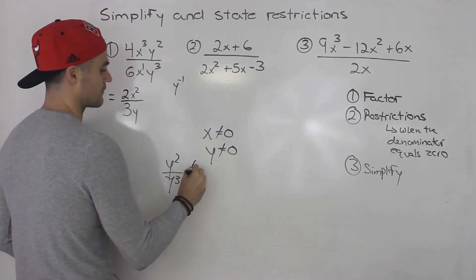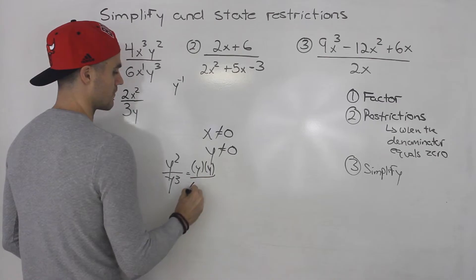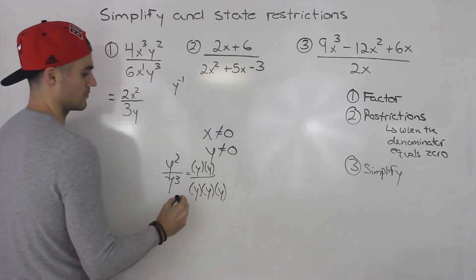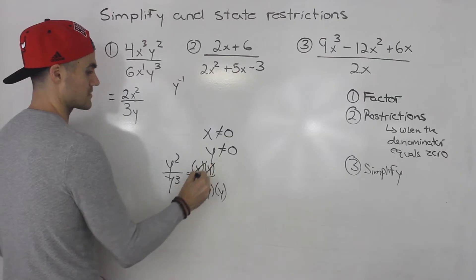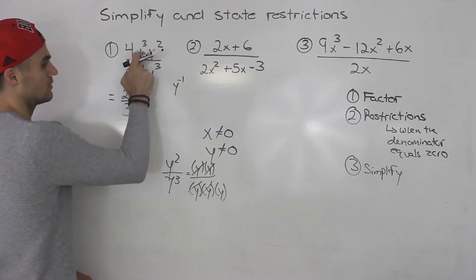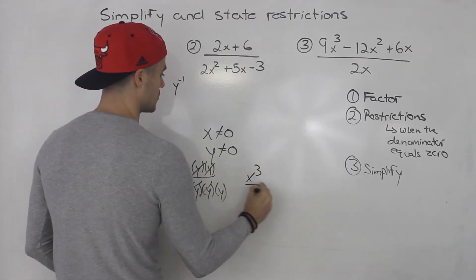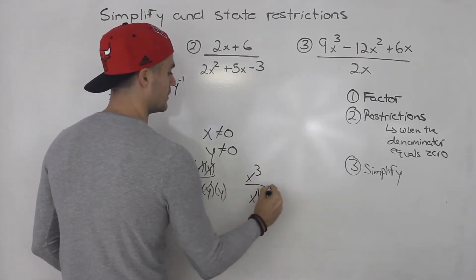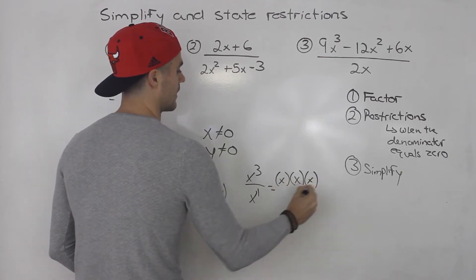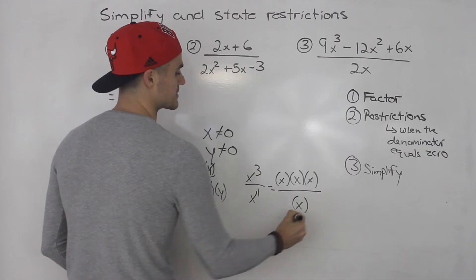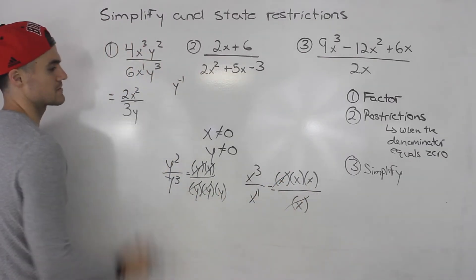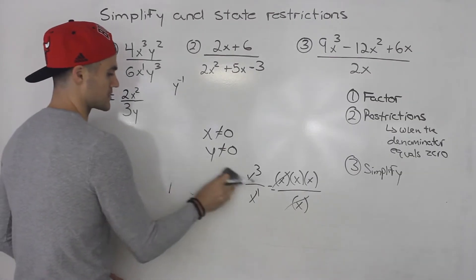Another way to see that: if we have y squared over y cubed, that's like having two y's at the top and three y's at the bottom — cancel, cancel, cancel — we're left with a y at the bottom. Similarly, x cubed over x to the one is three x's at the top and one x at the bottom — cancel, cancel — we're left with two x's at the top.